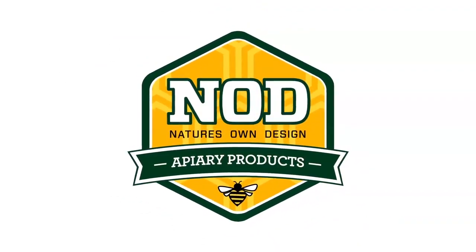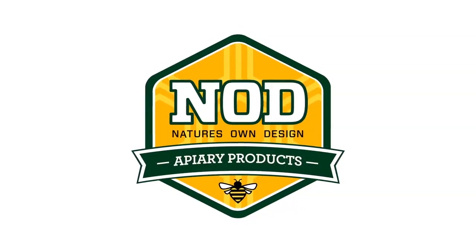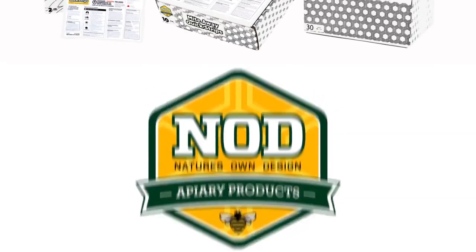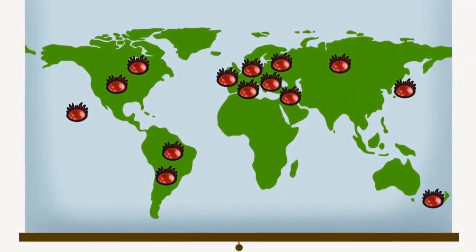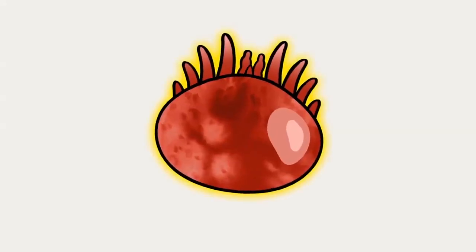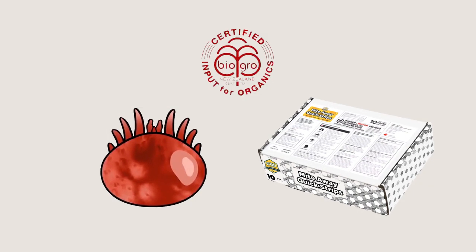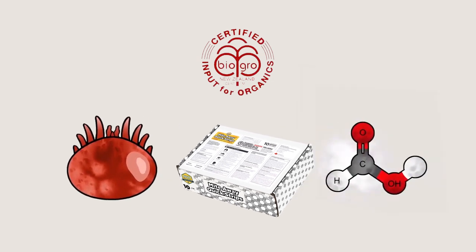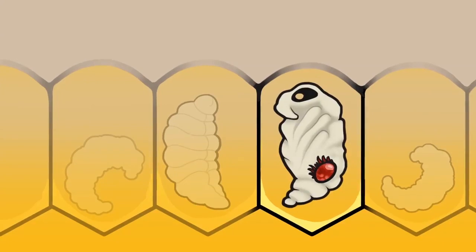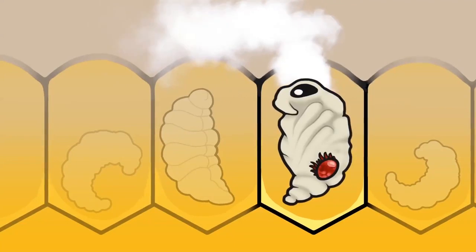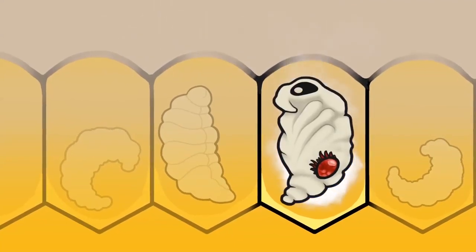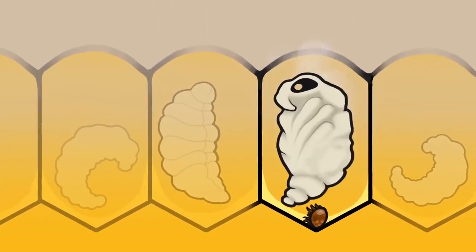Welcome to the MiteAway QuickStrips application video. Since 1997, Nod Apiary Products has been providing beekeepers with sustainable solutions to control the invasive mite varroa destructor. Max is an innovative solution that controls the varroa mite by harnessing an organic acid called formic acid. Max are applied in the heart of the hive. The Strip's innovation makes the formic acid molecules sticky. It can penetrate the brood cap, targeting mites where they reproduce, and helps arrest the transmission of viruses.